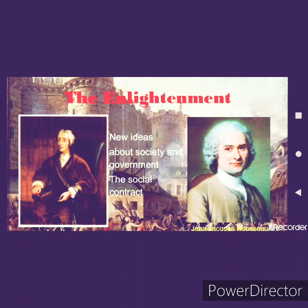Rousseau, in his book The Social Contract, proposed a form of government based on a social contract between people and their representatives. The social contract theory suggests that laws should be made according to the will of the people and executed by their representatives. Montesquieu, in The Spirit of the Laws, stressed the concept of separation of powers.